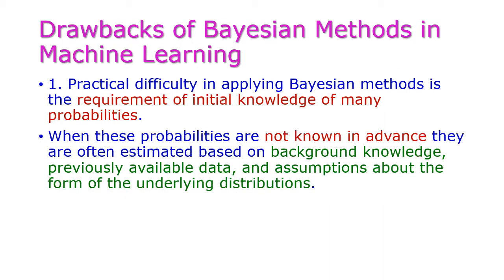Now let us see the drawbacks of Bayesian methods. The most important difficulty is that Bayesian learning requires initial knowledge of many probabilities. If the initial knowledge is not known in advance, it will estimate those things using background knowledge, previously available data, and assumptions about the form of the underlying distributions. So the initial knowledge of probability is very important here.